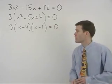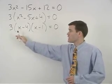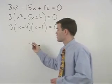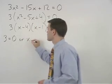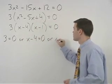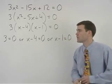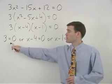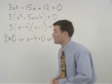Since there are three parts to the left side of the equation, we set each of those parts equal to 0. So either 3 equals 0, or x minus 4 equals 0, or x minus 1 equals 0. Notice that 3 equals 0 is a false statement, so we can cancel this equation out of the problem.